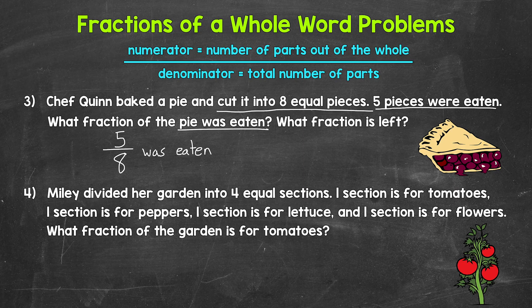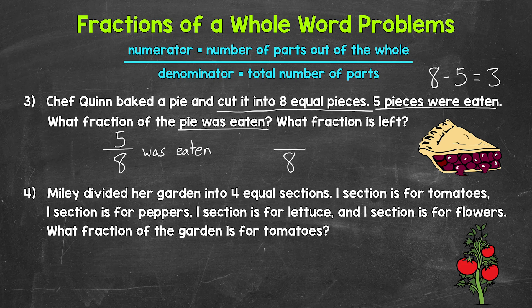Now, what fraction is left? There were eight total pieces and five were eaten, so we subtract five from eight, giving us three pieces left. The denominator is eight — eight total pieces. The numerator is three — there are three pieces left. Three pieces out of the eight total pieces are left, so our fraction is three eighths. Five eighths of the pie was eaten and three eighths of the pie is left.